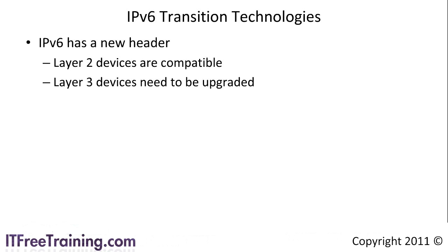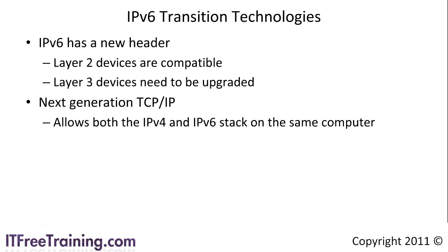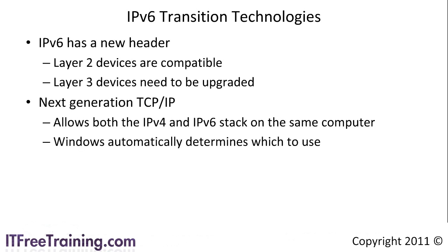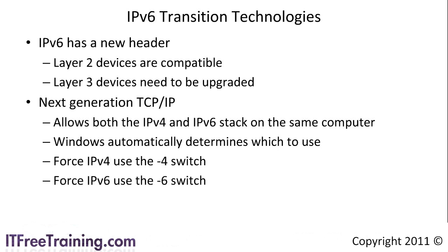The first transition technology is what Microsoft calls Next Generation TCP/IP. Simply put, this means Windows Server 2008 allows both the IP version 4 stack and IP version 6 stack to be used on the same computer. Windows will attempt to automatically decide which to use. A lot of commands support the -4 and -6 switches, which force Windows to use either the IP version 4 protocol or the IP version 6 protocol. Even with Next Generation TCP/IP, since the whole internet is not yet IP version 6 ready, you may have a situation in which you need to go over the IP version 4 network to reach an IP version 6 client, and this is where transition technologies come into play.